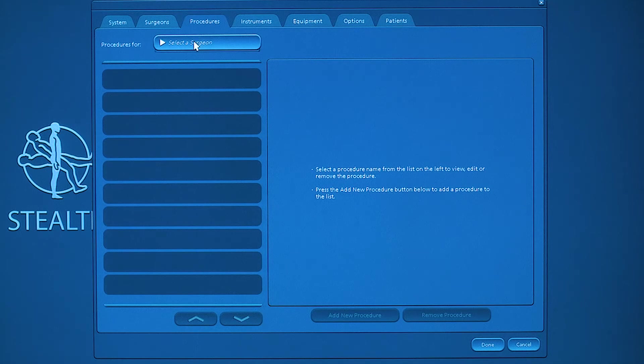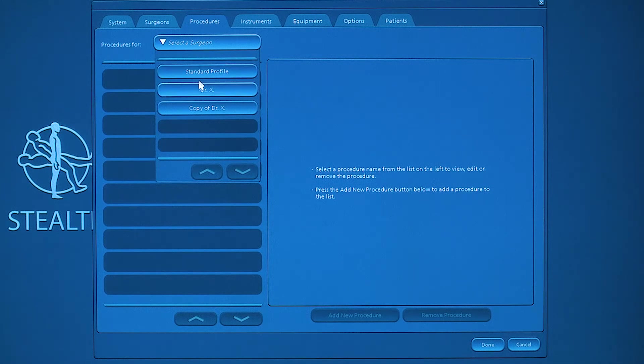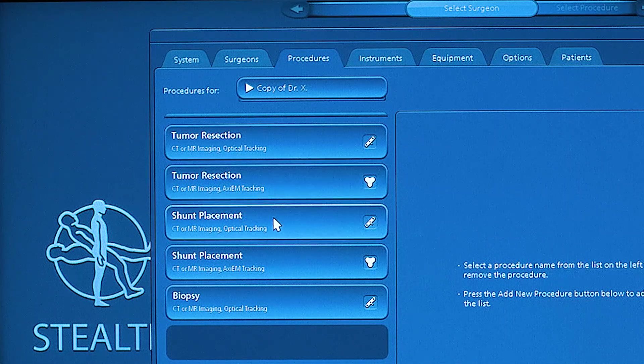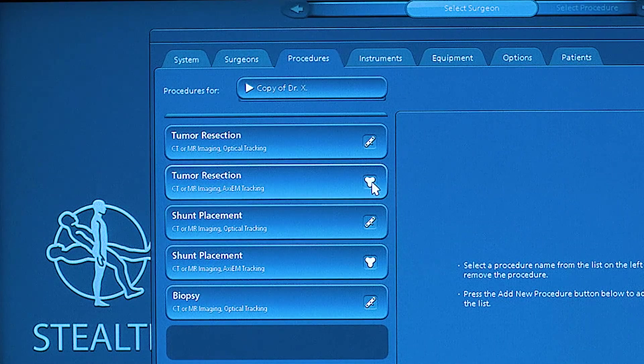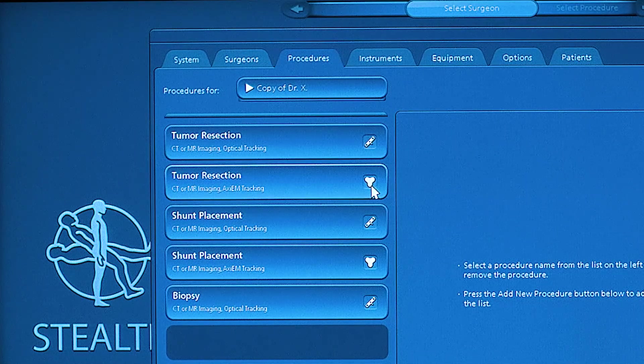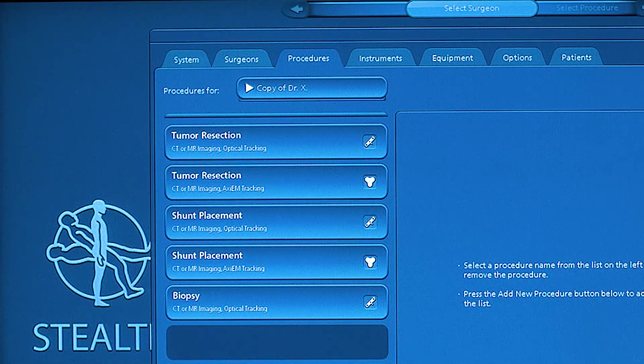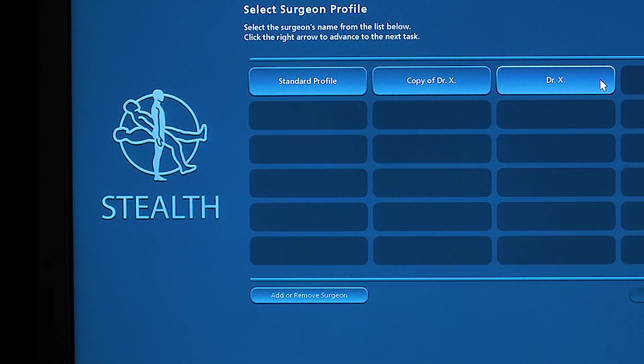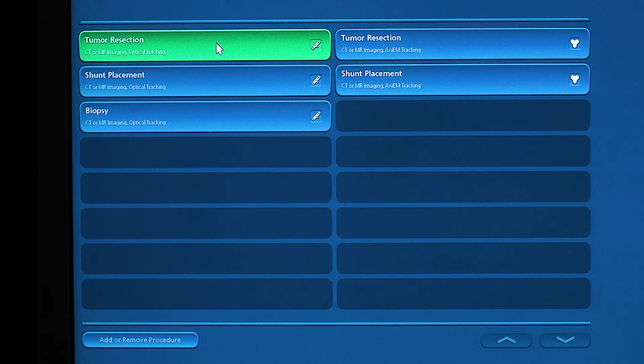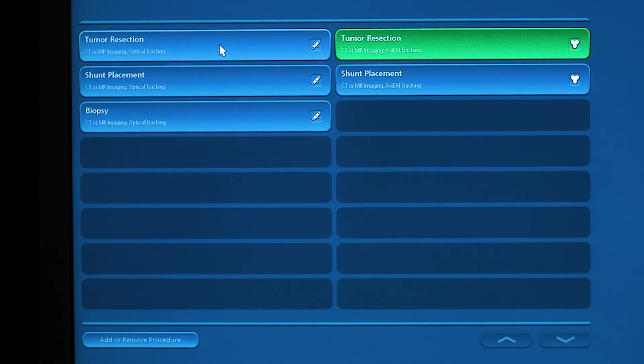From there you can add specific procedures: tumor resection, shunt placement, and biopsy. These indicators on the right indicate either optical or EM tracking. We will demonstrate each. Entering into our surgeon's tool card, you can either double click or single click and advance. We'll use optical tumor resection for this instance. You can single click and advance forward or double click the application that you wish to utilize.